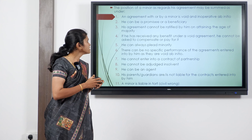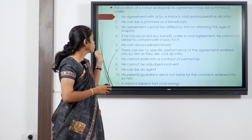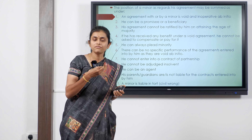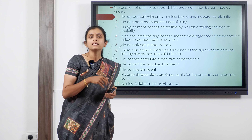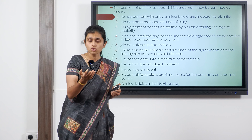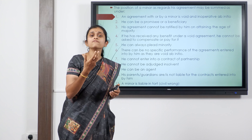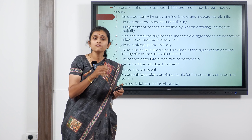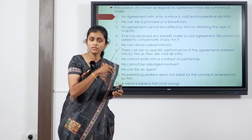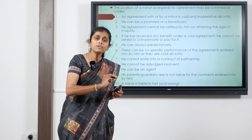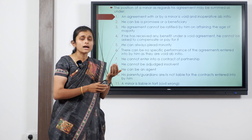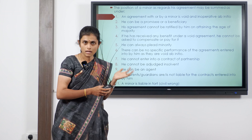Fourth, if a minor has received any benefit under a void agreement, he cannot be asked to compensate or pay for it. For example, if he received a benefit of 5,000 rupees, he cannot be asked to return it because the contract is void. However, if he had spent only 2,000 of the 5,000 rupees, he should reimburse the remaining 3,000 rupees. The court ensures the plaintiff can mitigate the loss suffered.